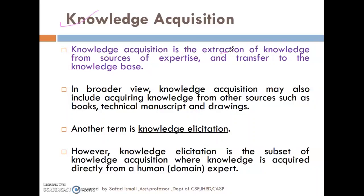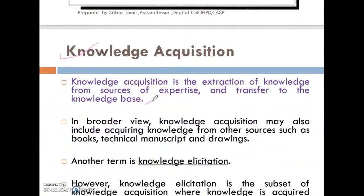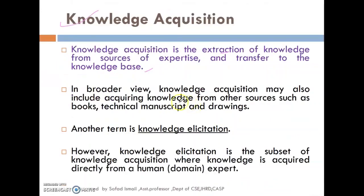In our central hub, we are based on a knowledge base. We can transfer it to our central hub. This is our knowledge acquisition. We have a broader view of acquiring knowledge from other sources. It includes books, manuscripts, drawings, Google search, web, and data. For all of our data, we can store and collect. Here is the knowledge citation.